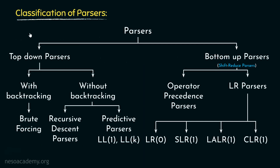We already have seen during the classification of parsers that the top-down parsers without backtracking are mainly of two types: one is recursive descent parsers and the other one is predictive parsers. In the previous session, we learnt about the recursive descent parsers.